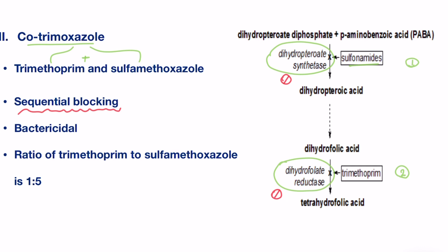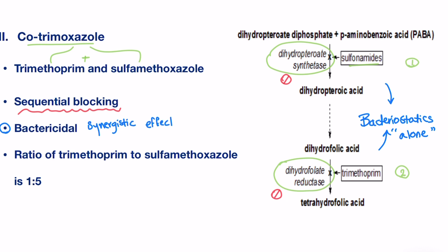You might ask yourself: why do we need a combination of these two drugs in the first place? The answer comes from the fact that trimethoprim and sulfonamides are both bacteriostatic when used alone. But a bactericidal effect can be achieved when these two drugs are combined due to their synergistic action. This strategy is very effective in inhibiting a biosynthetic route and destroying the bacteria, while keeping the doses of both drugs at a safe level. This level is attained by a ratio of 1 to 5, where 1 is for trimethoprim and 5 is for sulfamethoxazole.